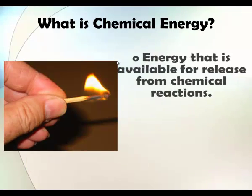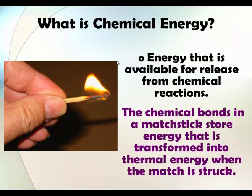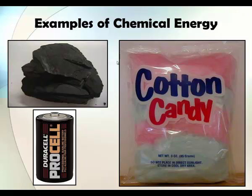What is chemical energy? It's energy that is available for release from chemical reactions. The chemical bonds in a matchstick store energy that is transformed into thermal energy when the match is struck. Some examples of chemical energy: coal has chemical energy because it's able to burn, batteries have acids in them, and food has chemicals that we eat for energy.